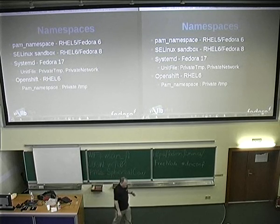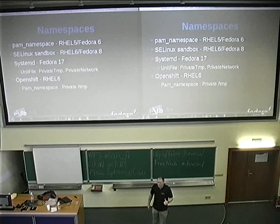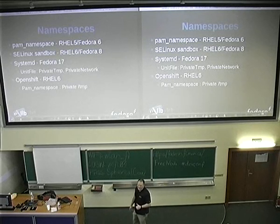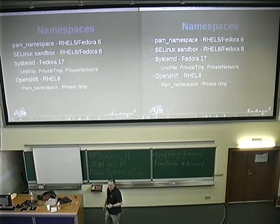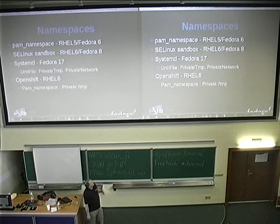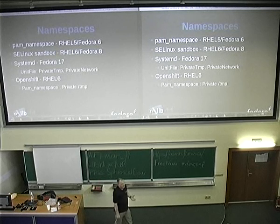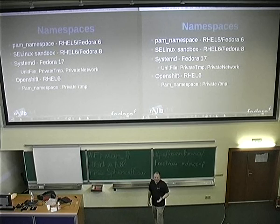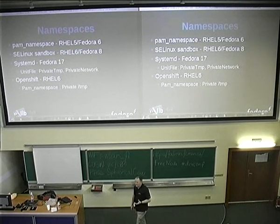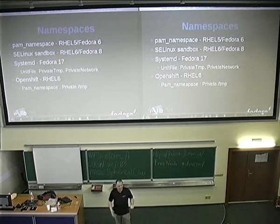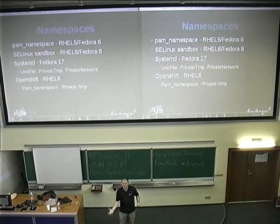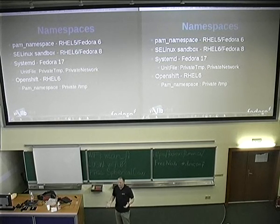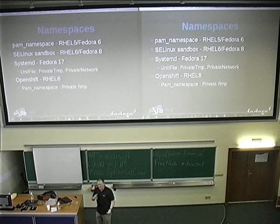I created the first container way back in RHEL 5 — a thing called PAM Namespace. PAM Namespace has been around since RHEL 5, and what it does is basically allow users to log into a system with different home directories and different /tmp directories, depending on their security level. It was really built for MLS systems — the idea was that you could log in at top secret and have one desktop, or log in at secret and have a different desktop.